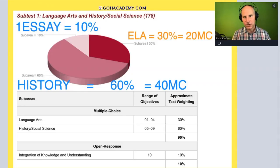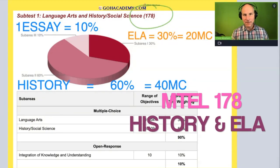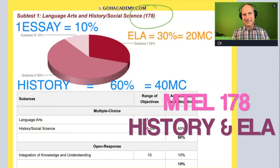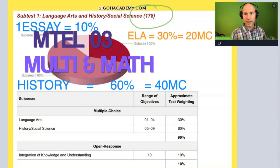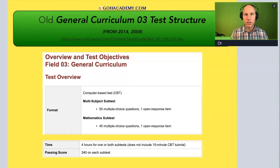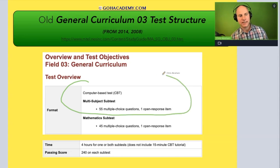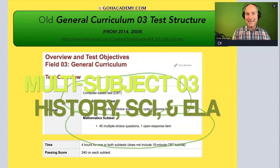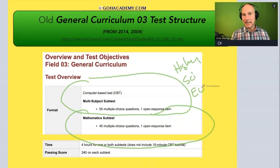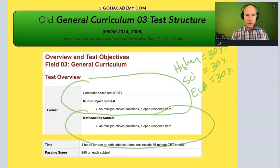In order to understand the new general curriculum multi-subject test — the 178 involving history and language arts — we need to look at the old exam, the MTEL 03. That previous version had two sub-tests: the first was the multi-subject and the second was a math sub-test. The multi-subject exam had a history, a science, and an ELA component, each worth about 30 percent of the exam, and there was one essay worth 10 percent.